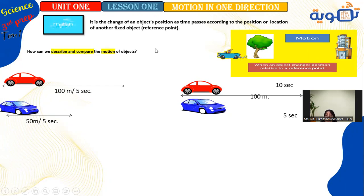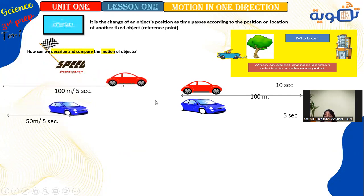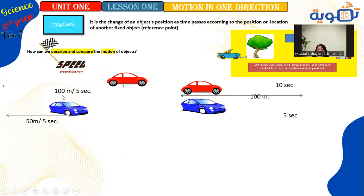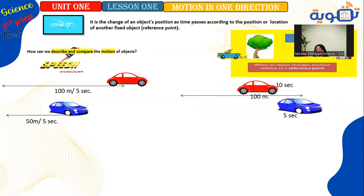How can we describe and compare the motion of objects? We can say that some objects are faster than others, so we have to come to the scientific term: speed. The red car is faster than the blue one because it covered 100 meters in 5 seconds, while the blue one covered only 50 meters in 5 seconds — covering a longer distance in the same time. In another case, the blue car is faster than the red one.